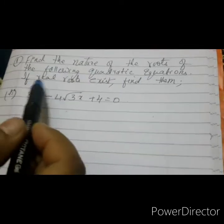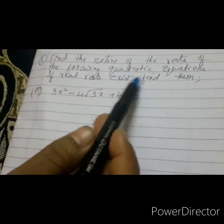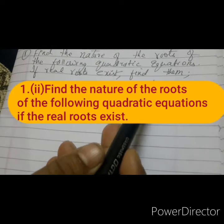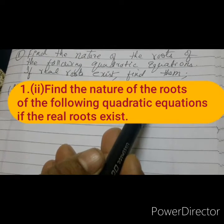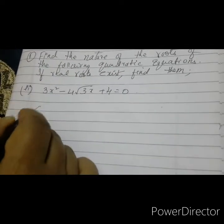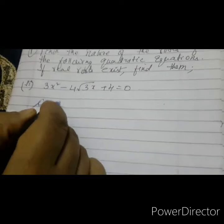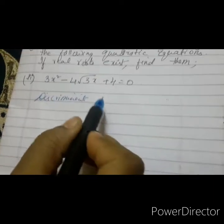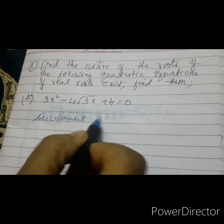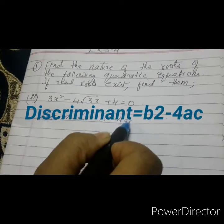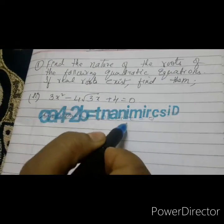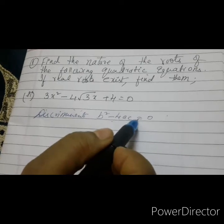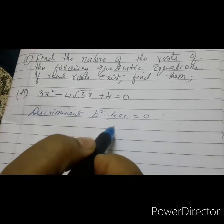Find the nature of the roots of the following quadratic equations. If real roots exist, find them. First we will check the discriminant. The discriminant is b squared minus 4ac. If you find b squared minus 4ac and it is less than 0, greater than 0, or equal to 0, we will see here.